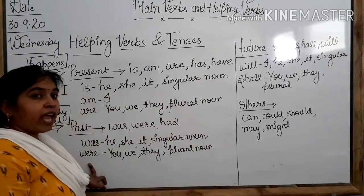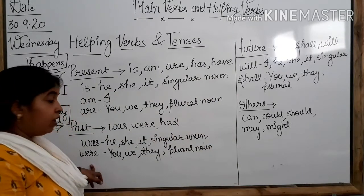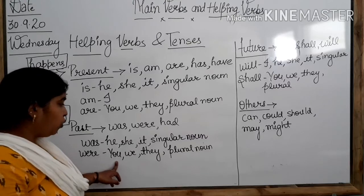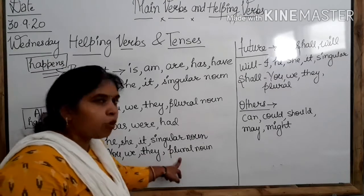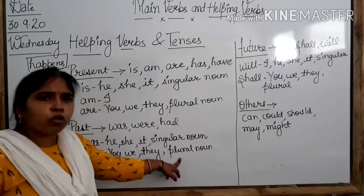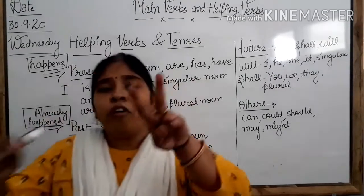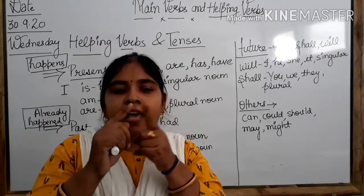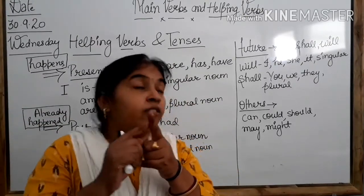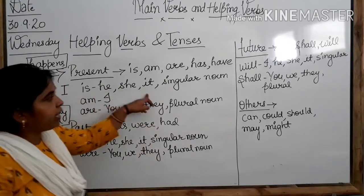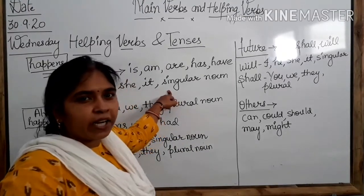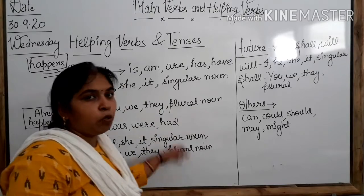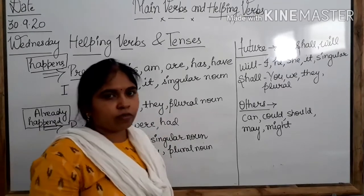We have 'were' also as a helping verb. What do we use with you, we, they, and plural noun? We use 'were.' So let's summarize: the first group is he, she, it, and singular noun — they use 'was.' The second group is you, they, and plural noun — they use 'were.'